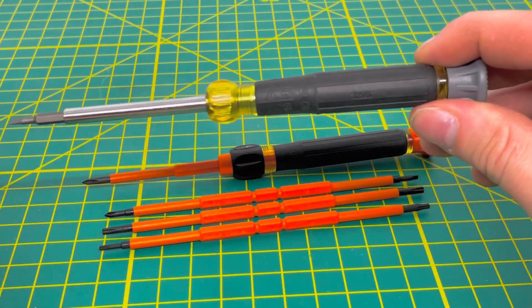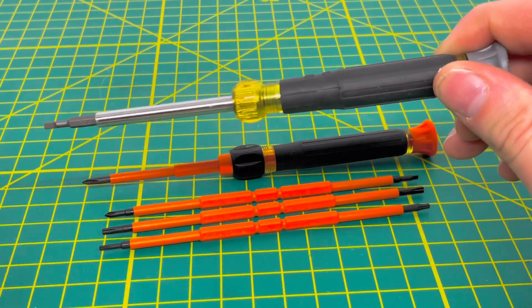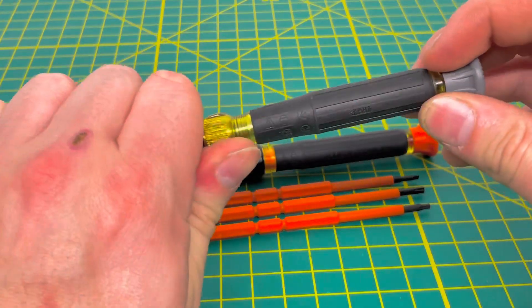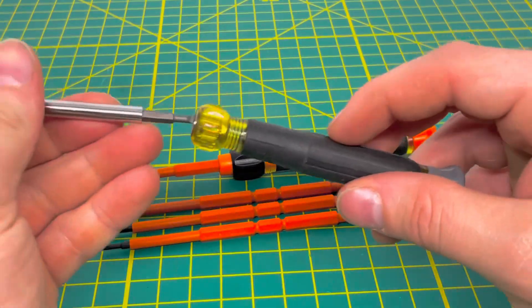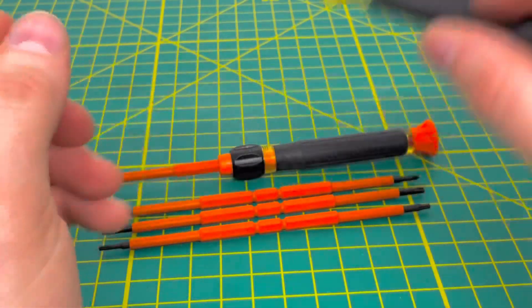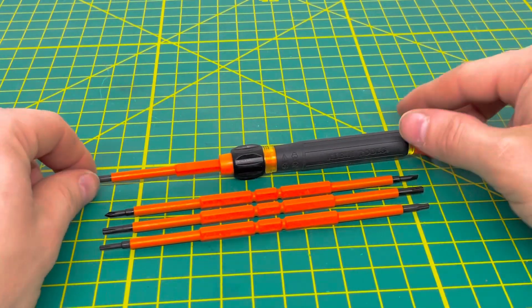This right here is one of their standard small electronic screwdrivers, a 4-in-1 where you can flip it around and get to the other two bits stored in the tool. Now let's talk about this tool.